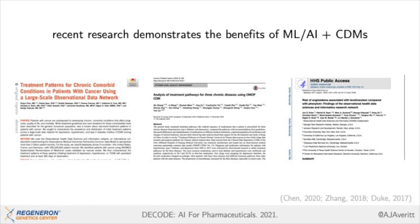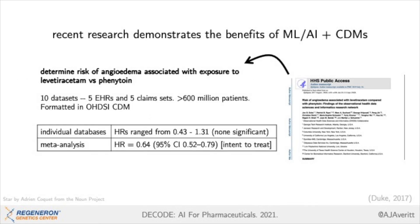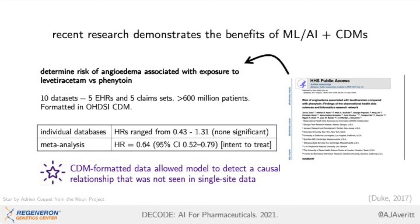Recent research demonstrates the benefits of CDMs to methods work. This paper, in particular, by Duke et al., sought to determine the risk of angioedema associated with exposure to levetiracetam versus phenytoin. The authors took 10 datasets, over 600 million unique patients, and standardized the format into the OHDSI Common Data Model. Across the individual databases, the hazard ratio of angioedema in levetiracetam versus phenytoin ranged from 0.43 to 1.31, with no significant findings. However, when meta-analyzed — a task functionally supported by CDM — the results indicated a significant protective effect of levetiracetam versus phenytoin for angioedema. The CDM-formatted data allowed the model to detect a causal relationship that was not seen in single-site data.